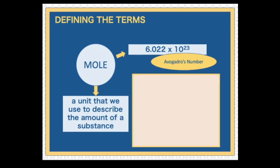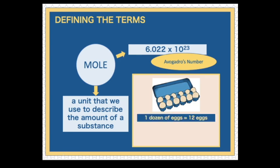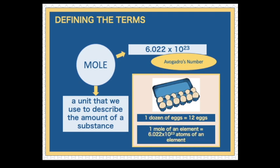To frame it in a more relatable example, the unit mole is like the unit dozen. When we say one dozen of eggs, we mean 12 pieces of eggs, right? In the same way that one mole of an element contains 6.022 times 10 raised to the 23rd power atoms of an element.